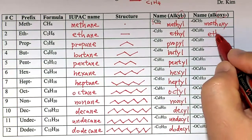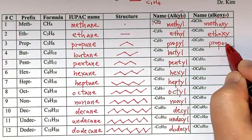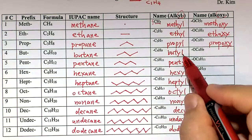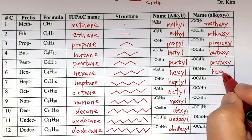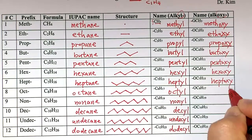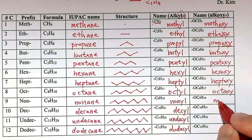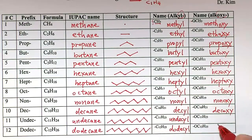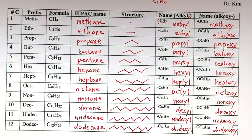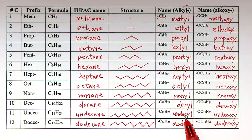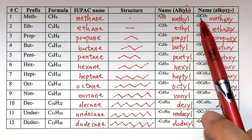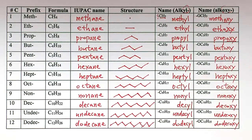Oxygen and an ethyl group is ethoxy. Then propoxy — we put -oxy — then butoxy, pentoxy, hexoxy, heptoxy, octoxy, nonoxy, decoxy, undecoxy, dodecoxy. So we put -oxy to indicate there's an oxygen in between.